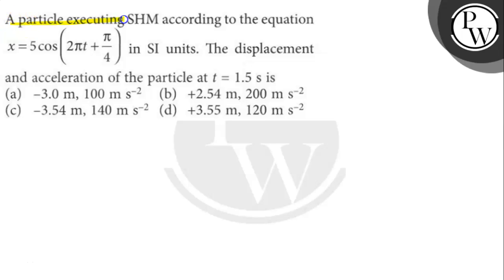a particle executing SHM according to the equation x equals to 5 cos into 2 pi t plus pi by 4 in SI units. The displacement and acceleration of the particle at t equals to 1.5 second is what?